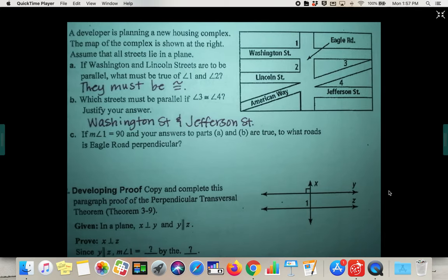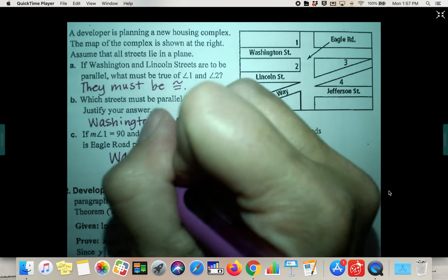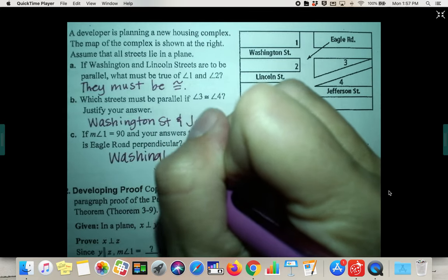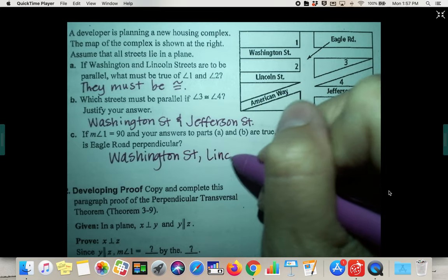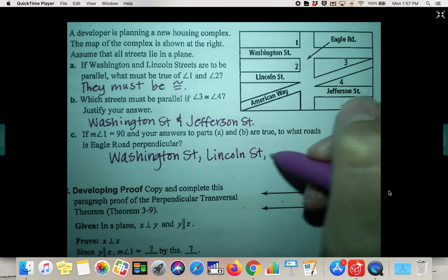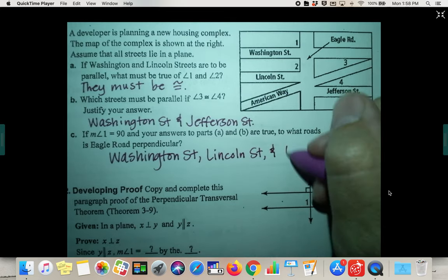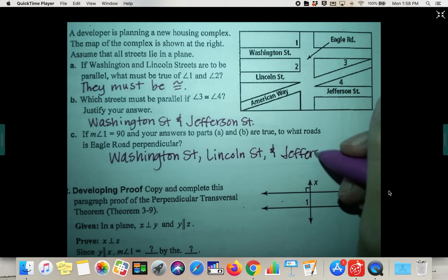So they would actually be perpendicular to Washington, and Lincoln, and Jefferson Street.